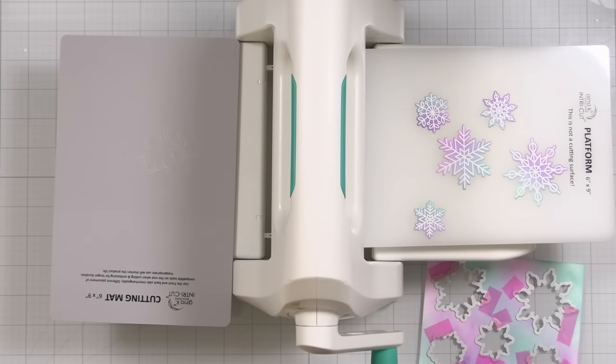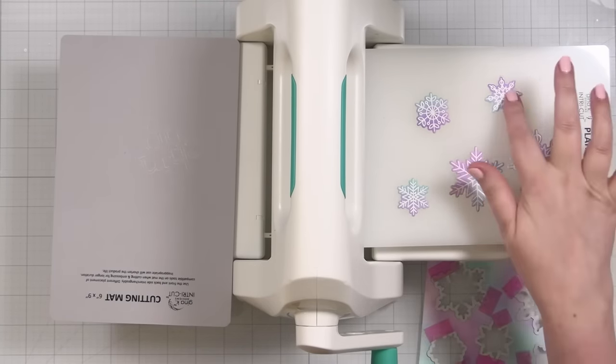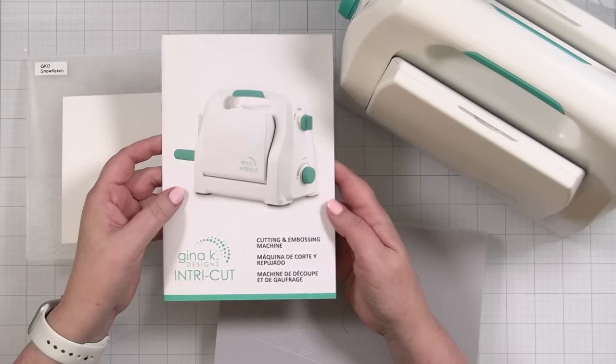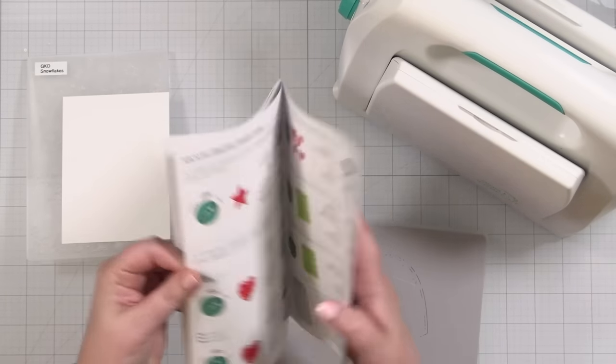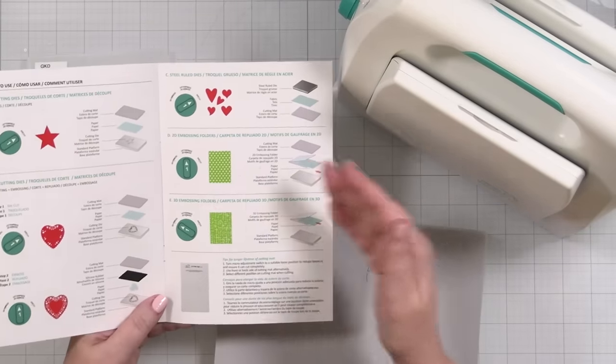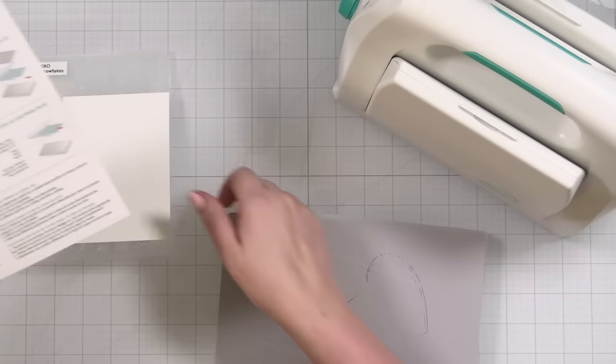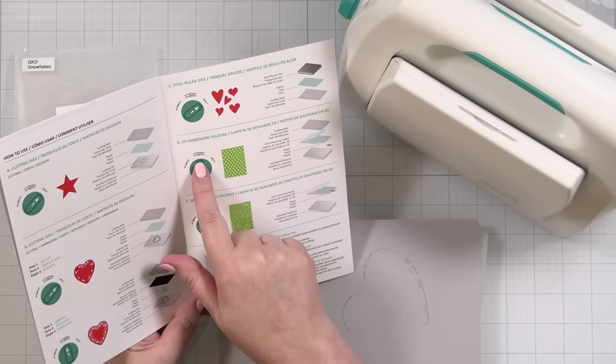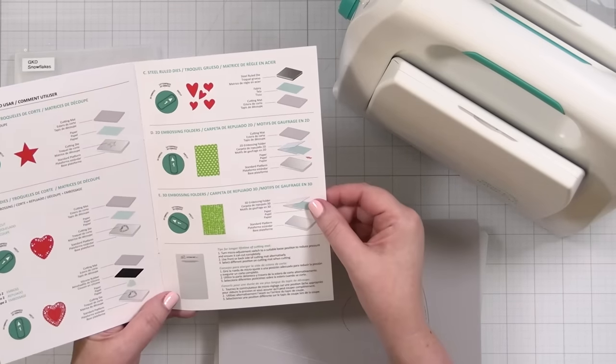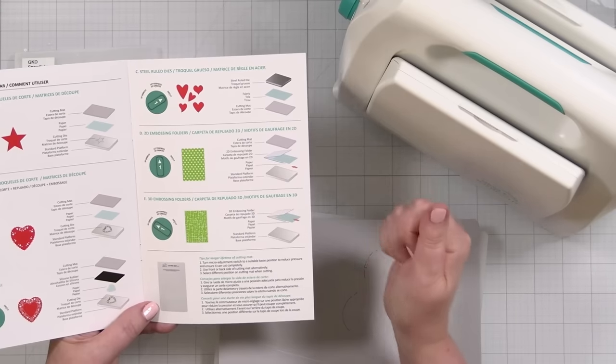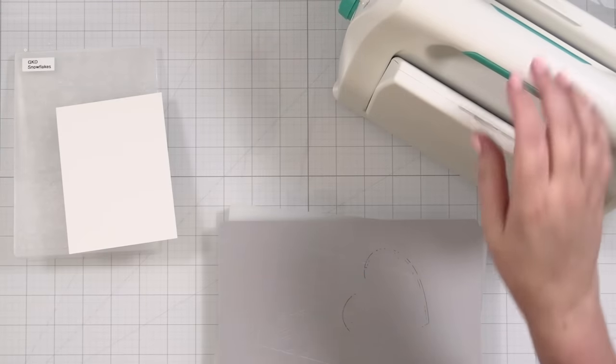So I'm going to do a little bit of embossing on another panel of cardstock for this project. When you get the machine, you will get a little guide in the back here and it gives you how you need to set up. So I am going to be doing this embossing folder, the Gina K Design Snowflakes. So you will set it to the 2D emboss and your sandwich is basically the same. Base plate, that, and the cutting mat on top.